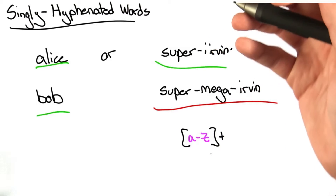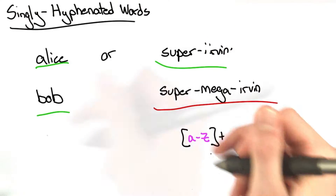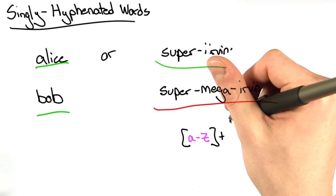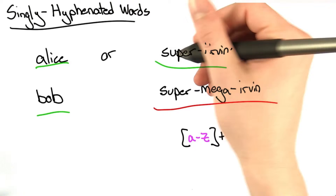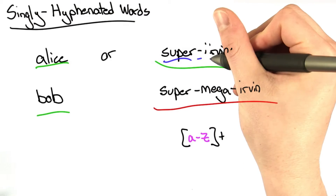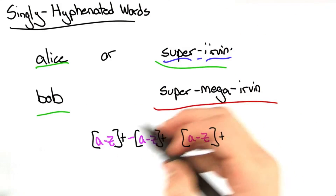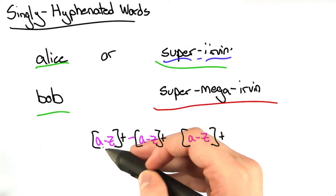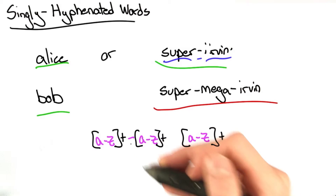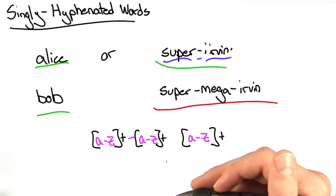Let's move on to the single hyphenated words. A single hyphenated word has three parts: a word, a hyphen, and another word. So here I match a word, a hyphen, and then another word.